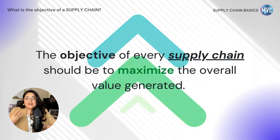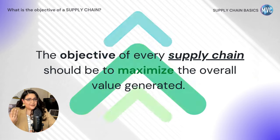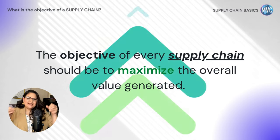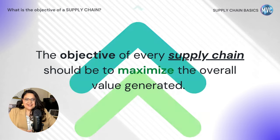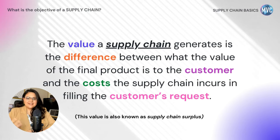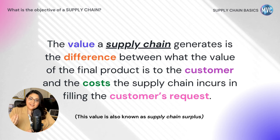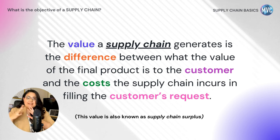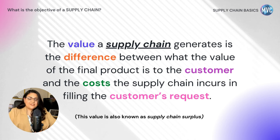The objective of every supply chain should be to maximize the overall value generated. The value a supply chain generates is the difference between what the value of the final product is to the customer and the cost that the supply chain incurs in filling that customer request. In this area, we need to get technical and call this value the supply chain surplus — that's what we call it.